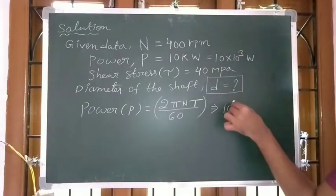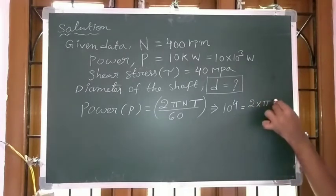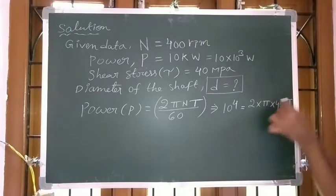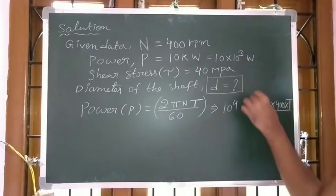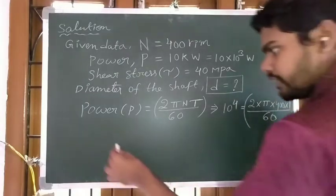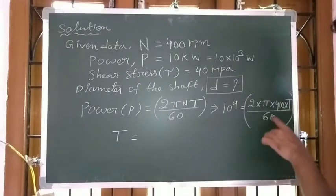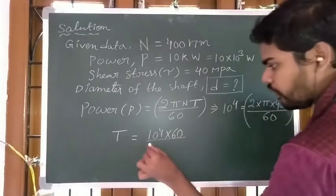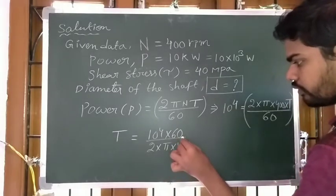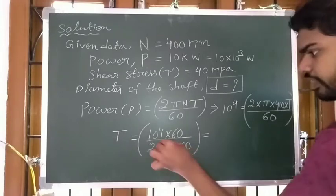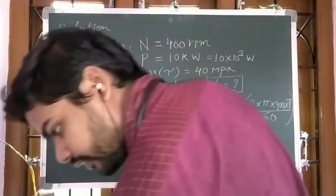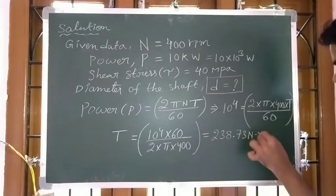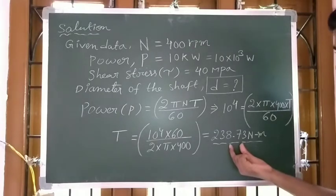Substituting: 10 to the power 4 watts equals 2 times pi times N, which is 400, times T, divided by 60. After rearranging, T is equal to 238.73 Newton meter. The unit for torque is Newton meter.